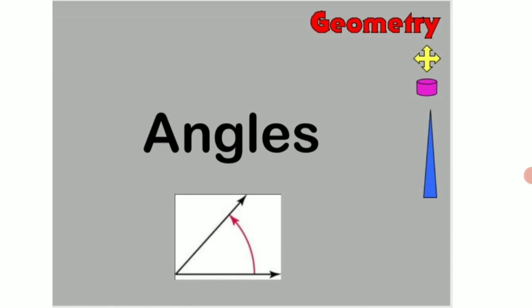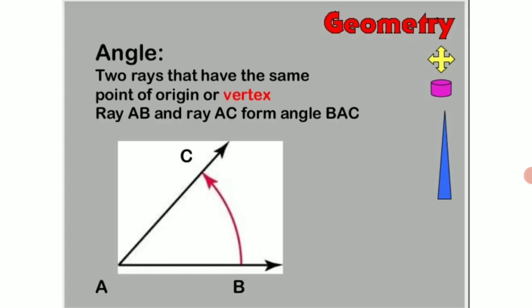Now let us come to what are angles. Two rays that have the same point of origin or vertex, they are said to form an angle. Here children you can see two arms or two rays. They are ray AB and ray AC or arms AB and arm AC which are meeting at a point and that point is known as A and that particular point is known to be the vertex.